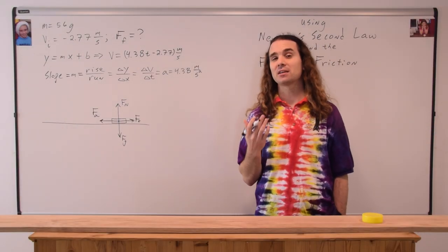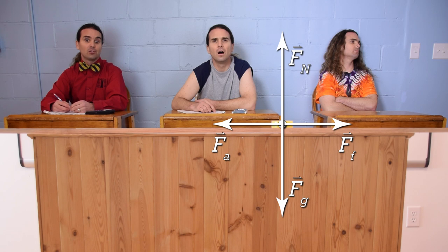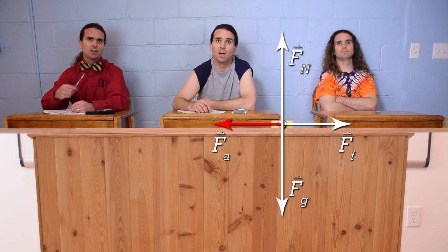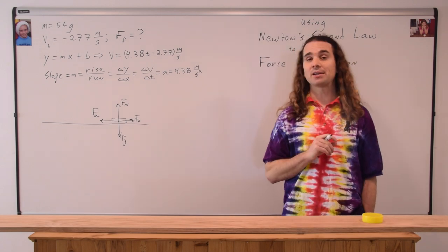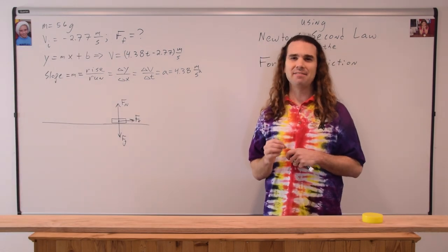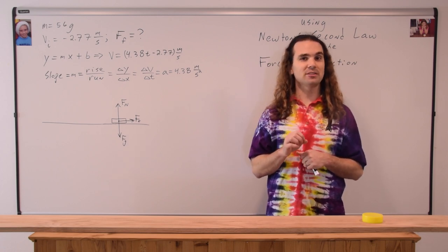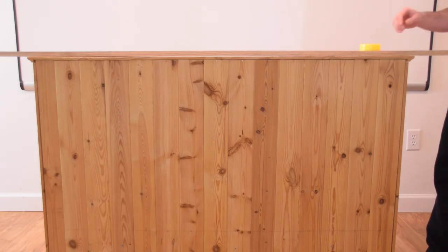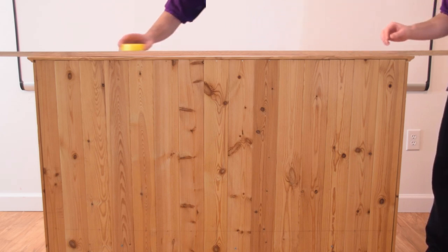I love this free body diagram because it highlights a common mistake that students make. One of the forces is actually not in this free body diagram. Does anybody know which one? The force applied, because it's a contact force and you don't push it the whole time, only at the beginning. Bobby, you are correct that there is no force applied in our free body diagram. And Billy, you are correct that I did apply a force to the puck — I applied a force to give it an initial velocity of negative 2.77 meters per second. The graph of velocity as a function of time is after I give it that initial velocity to the left. So the free body diagram we're drawing is after I release the puck while it is slowing down. Because the force applied is a contact force, my hand was not on the puck while it was sliding and slowing down.